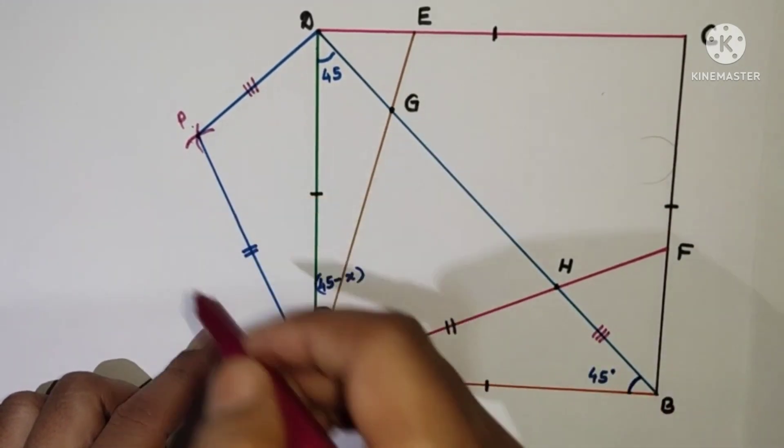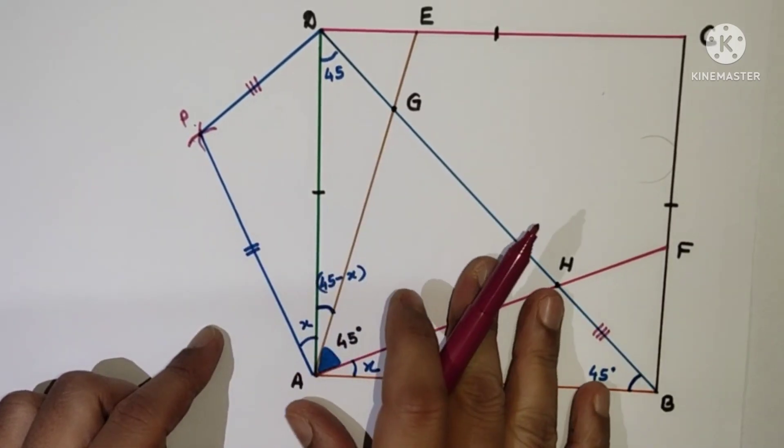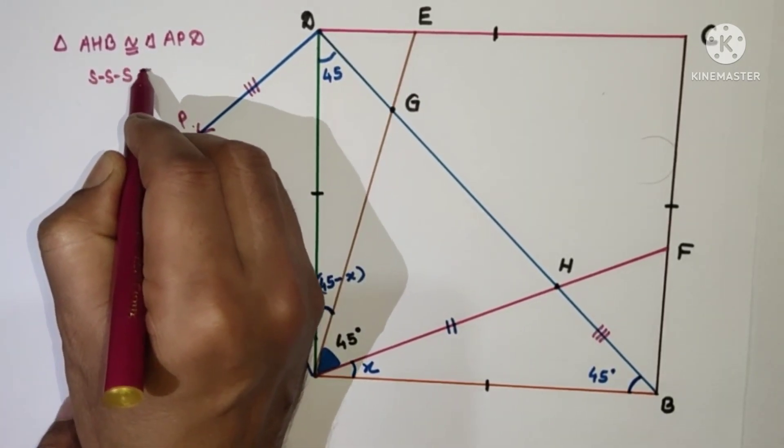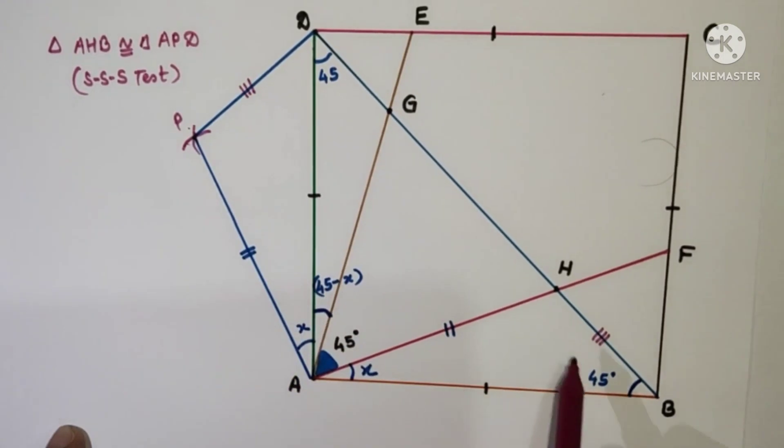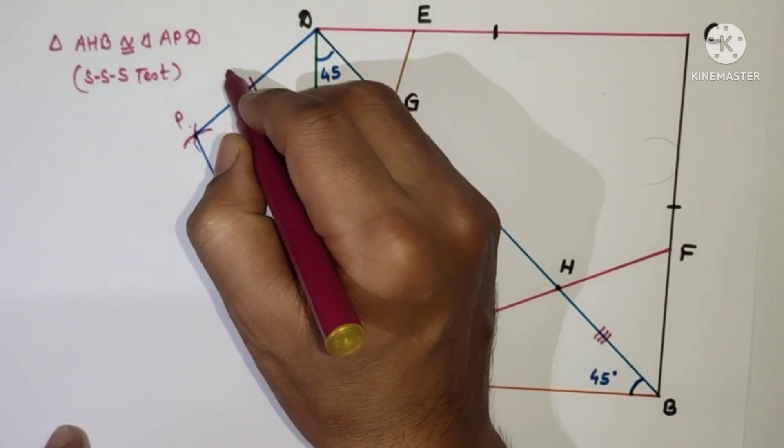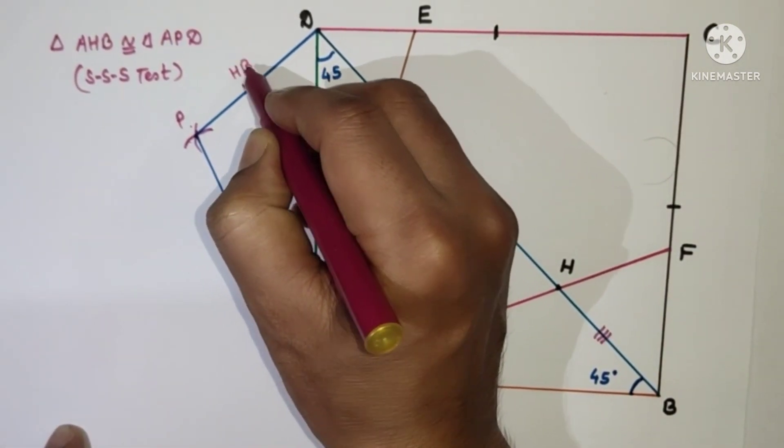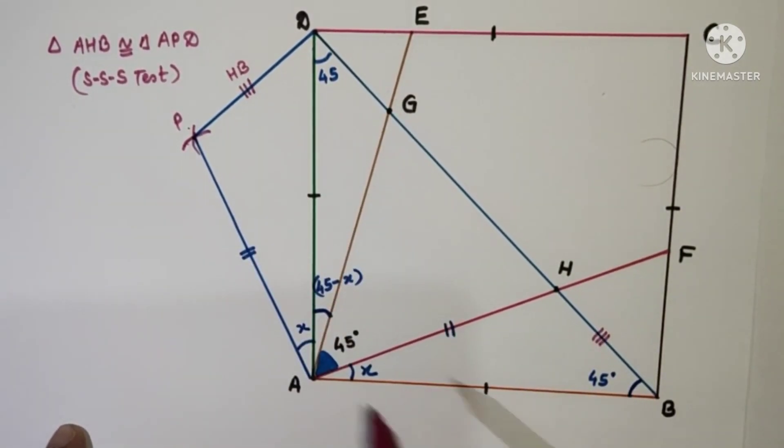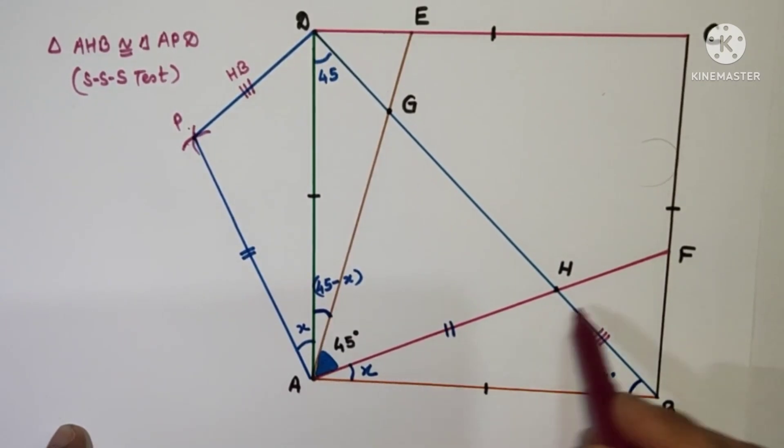So this part is equal to this part. So by construction, these two triangles are congruent. Triangle AHB is congruent to APD by SSS test. HB is equal to PD. This length is HB and this is equal to this. Corresponding sides of congruent triangles are equal.